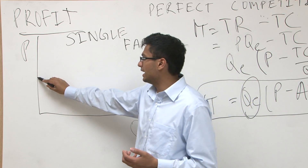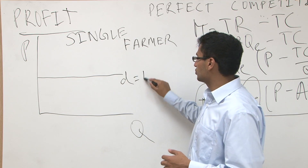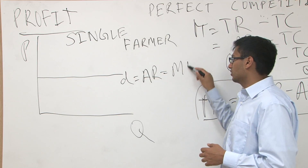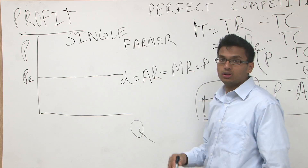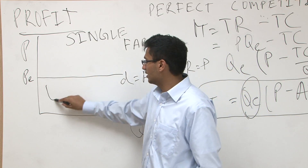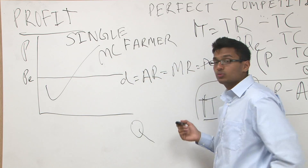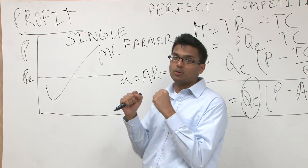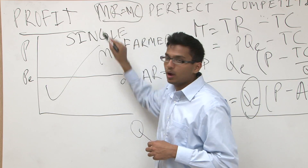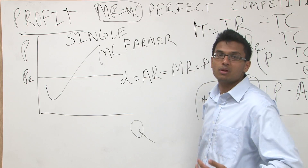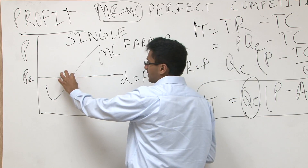We also have the marginal cost line that looks like a check mark — that's MC or marginal cost. One of the golden rules from last class: profit maximization occurs where MR equals MC. Please remember that MR equals MC is the golden rule. So MR meets MC right about here on the graph. We drop down from that intersection to find the quantity — this will be my QE. For a single firm you can use little q; if you're showing both the market and firm graphs, use little QE to be clear.